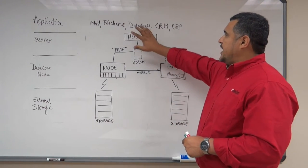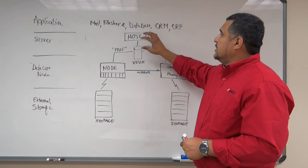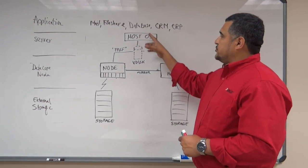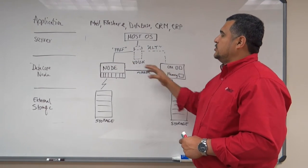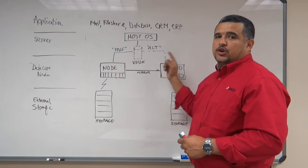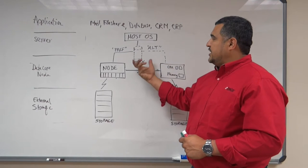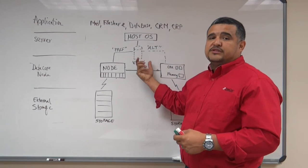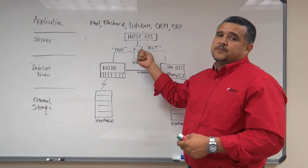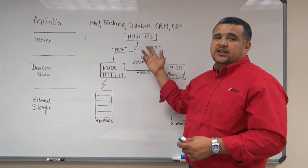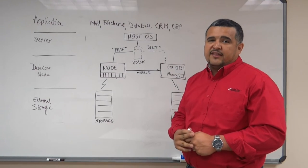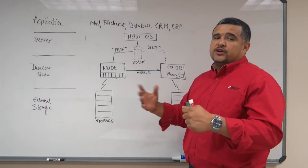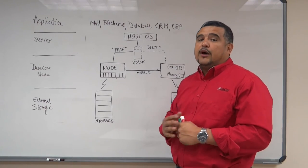As you can see, we have a host operating system that has different applications running on it. This host OS will have two paths, one per DataCore node, and DataCore will present a virtual disk, which will basically be a volume presented to the host OS. The host OS will have the ability to fail back and forth between the two paths at any time due to maintenance issues or some type of hardware or network outage.